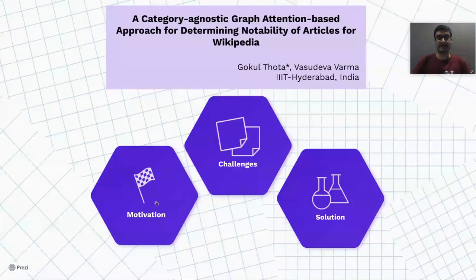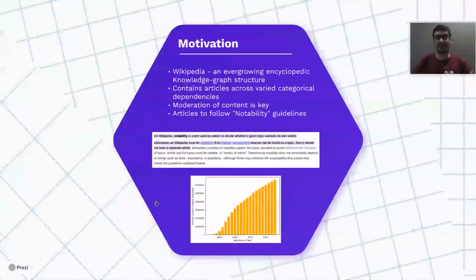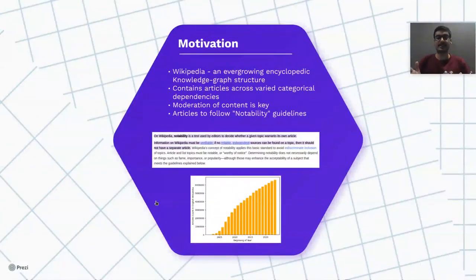Let's look at the motivation of our problem. Wikipedia is an ever-growing encyclopedic knowledge graph structure which contains several titles belonging to a wide variety of categories, and the content upload rate has been increasing over the past few years as we can observe from the graph. This makes it necessary to perform moderation on the content being uploaded to Wikipedia.